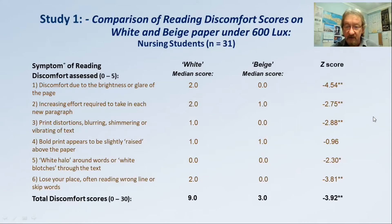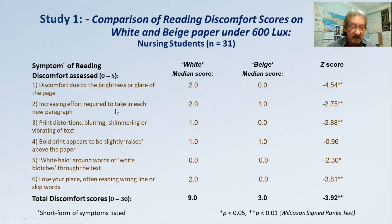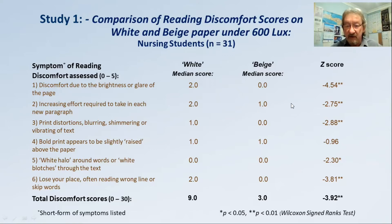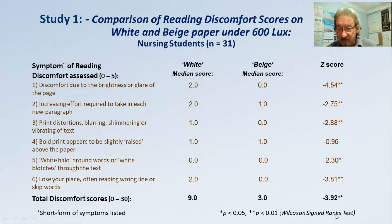Now for the results of the study. It was in two parts; the first part we called study one, where the students carried out the experiment under moderate fluorescent lighting levels. Here are the six symptoms in the questionnaire. I should point out that since I presented some preliminary findings from our study at the conference last year, we have since increased the robustness of the statistical analysis by using the Wilcoxon signed-ranks test.